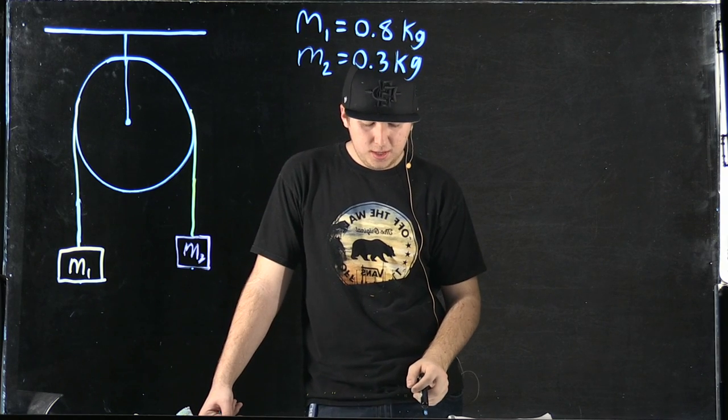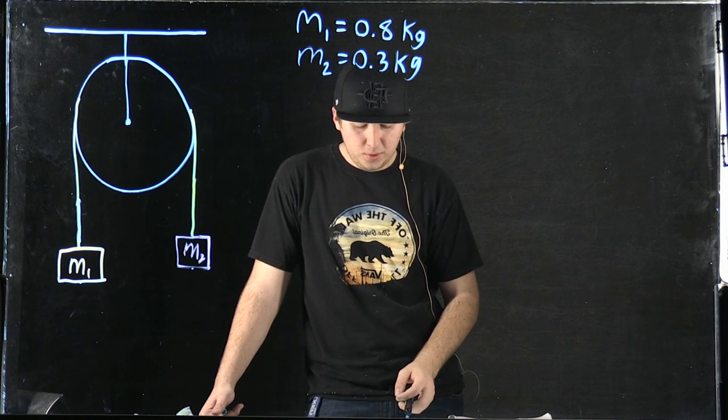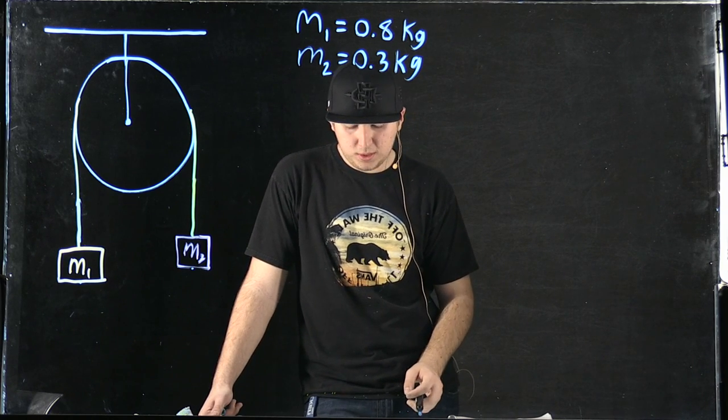are connected by a string. The string goes over a pulley so that each box hangs from each side of the pulley, ignoring the mass of the pulley and the string, and assuming no friction between the string and the pulley.